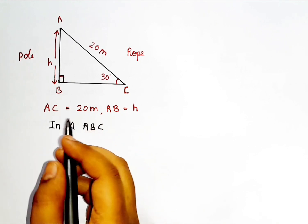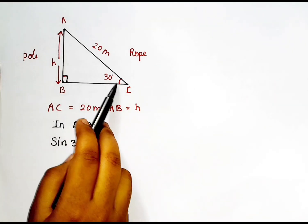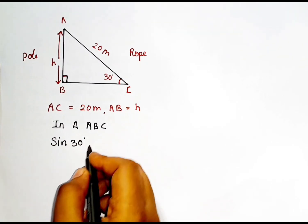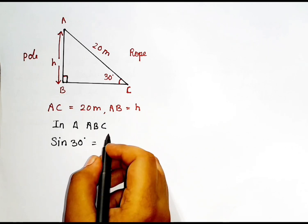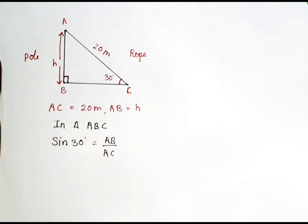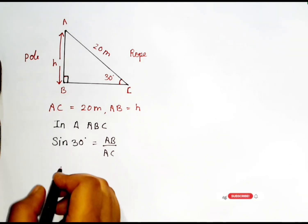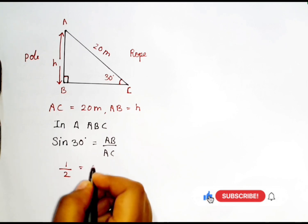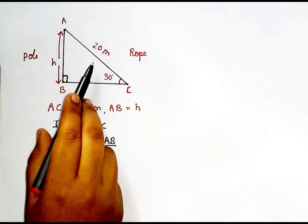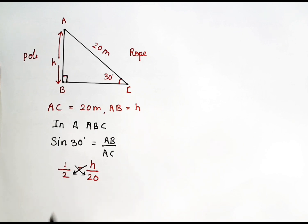In triangle ABC, I am going to take sin 30 degrees. The opposite side for 30 degrees is AB, the height of the pole, and the hypotenuse is AC. So sin 30° = AB / AC. Substituting from the trigonometric table, sin 30° = 1/2, so 1/2 = h / 20.